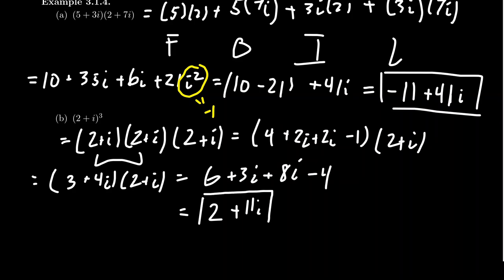Cubing just means we had to FOIL it multiple times — we did the first two factors, then multiplied by the third.